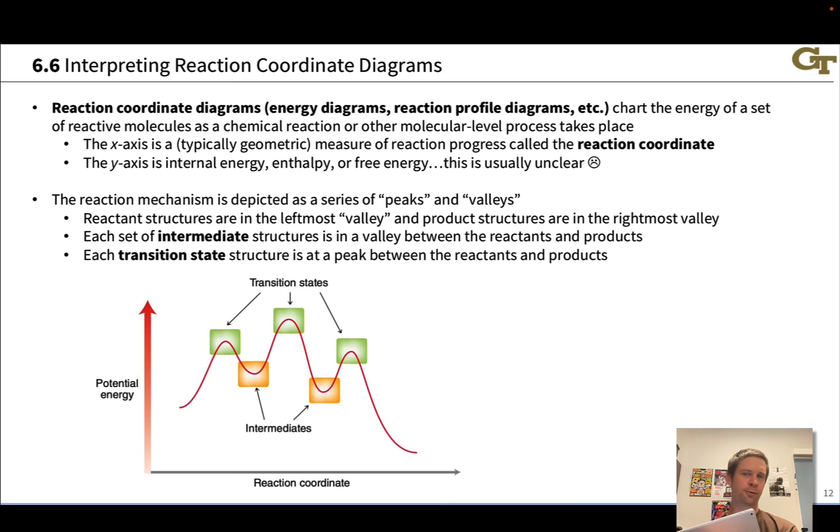So your basic structure for a reaction coordinate diagram has some measure of energy on the y-axis and some measure of reaction progress on the x-axis. And this is, you know, we can vaguely think of this as a kind of geometric coordinate. Maybe it's a bond length, maybe it's a bond angle, something like that. For relatively complex chemical change, it's got to be some kind of convoluted geometric parameter. You can just think of it as reaction progress with reactant structures over here and product structures over here.